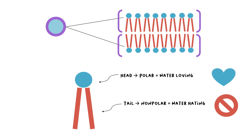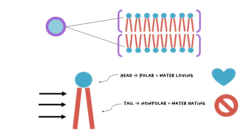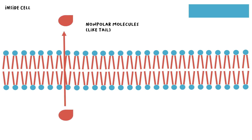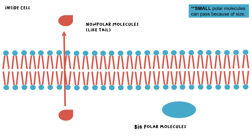Looking at the phospholipid, the tail is bigger than the head. This is the part of the membrane that determines whether certain molecules are allowed to pass — the actual gatekeeper. Molecules with similar chemical properties as the tail, meaning non-polar ones, can go through. For big polar ones like the head, those can't pass. In other words, the non-polar membrane allows non-polar molecules to pass, while polar or water-loving ones cannot.